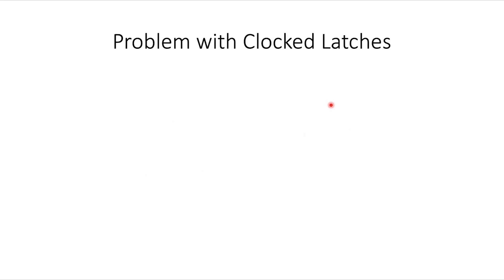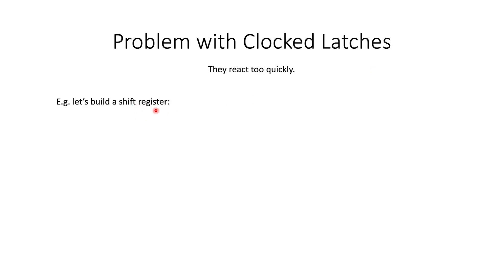Let's look at the problem with a clocked latch like we defined before — for instance a clocked and-or latch from the previous video. The problem is that they react too quickly. To show what this means, we'll build something called a shift register, and in building this we can see immediately why these clocked latches are not sufficient to do what we want.